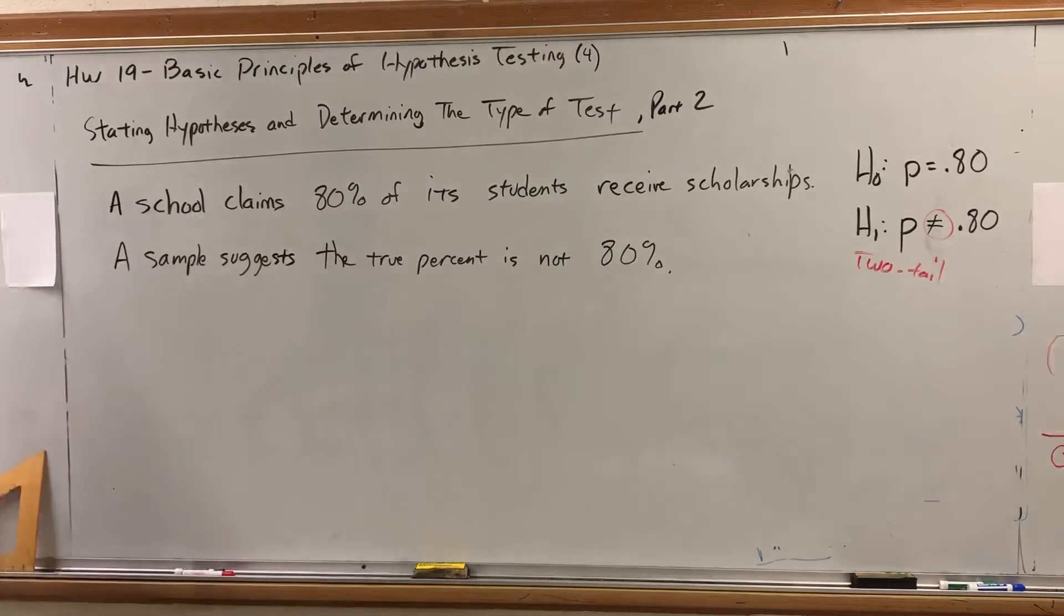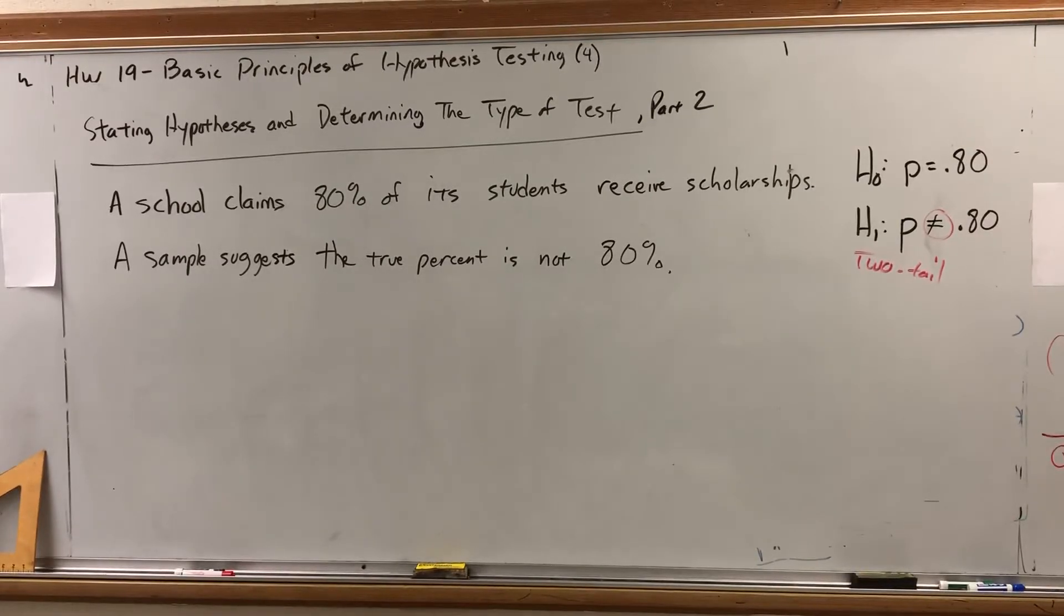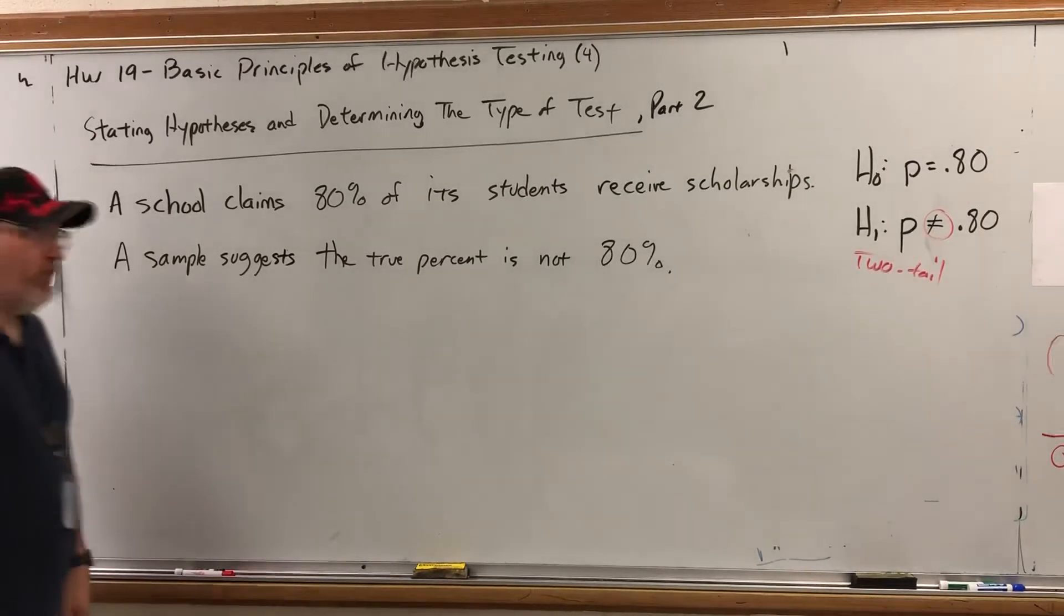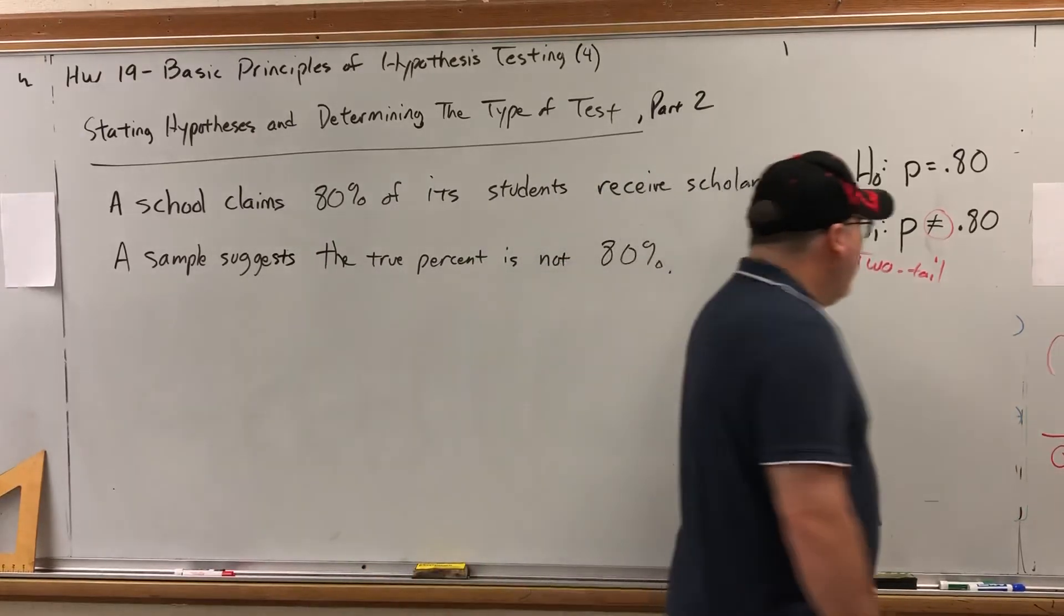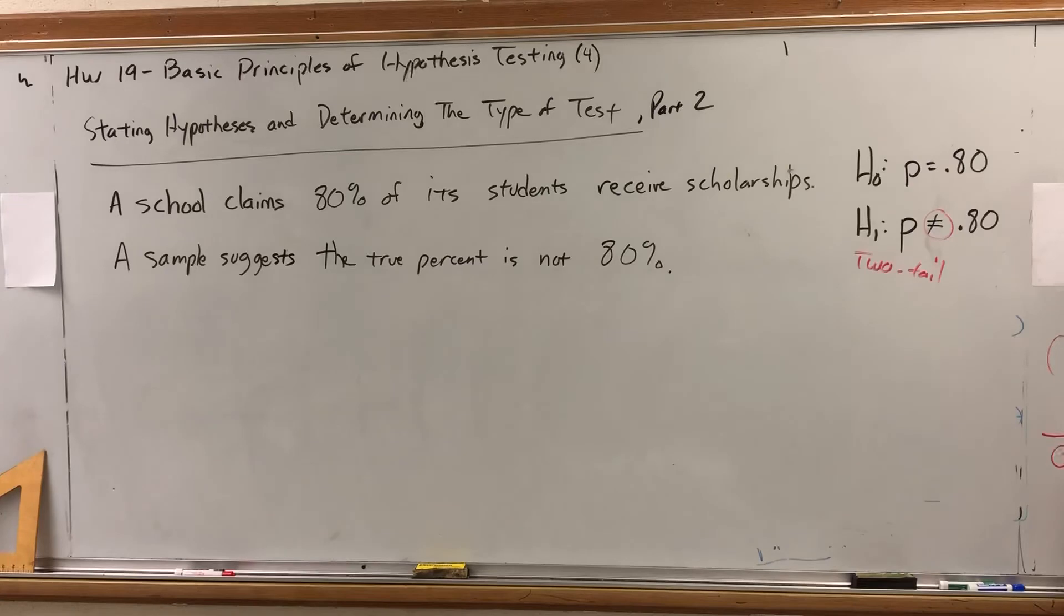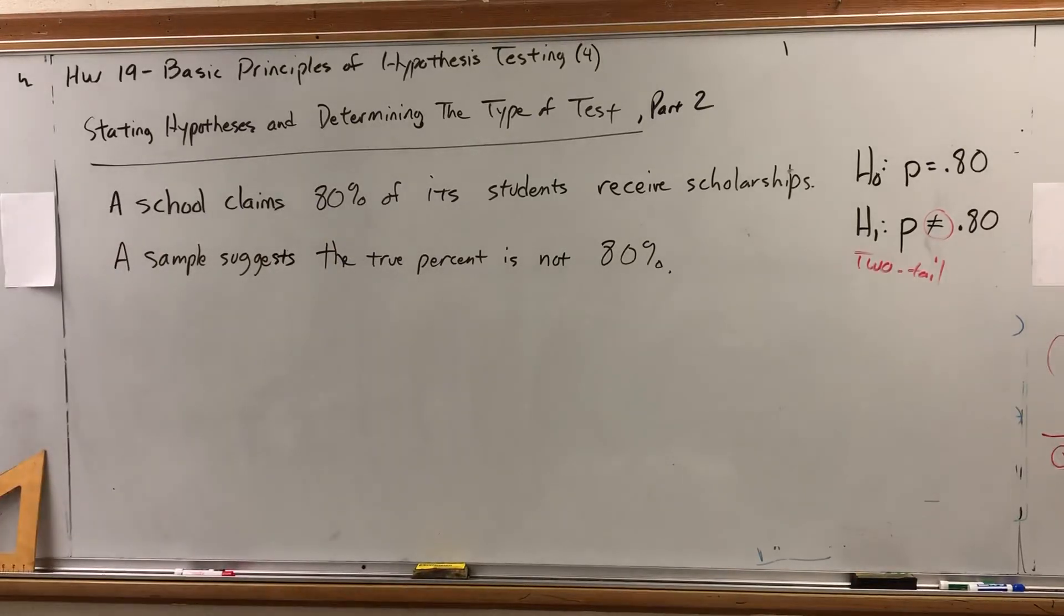Again, determining the type of test is easy once the hypotheses are written. That's why at the beginning of any hypothesis test, if the hypotheses are not given to you, you should carefully write them down and make sure that they're correct before you move forward. Again, writing them down entails two things. Number one, which parameter are we talking about? It's either mu or p. And number two, in the alternative, is the suggested alternative greater than, less than, or not equal to. Sometimes it's implied, sometimes it's explicitly stated.